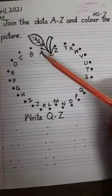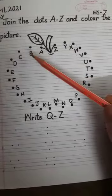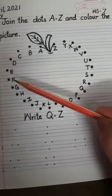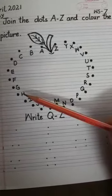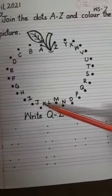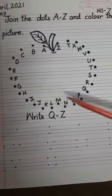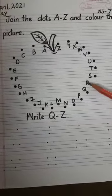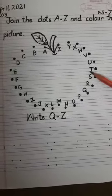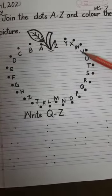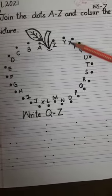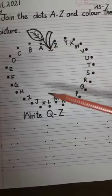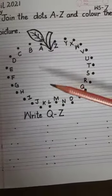Start from here. A B C D E F G H I J K L M N O P Q R S T U V W X Y Z. Join the dots A to Z then color the picture.